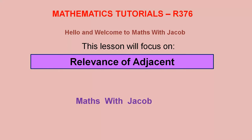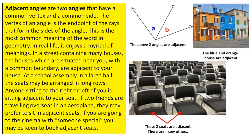Hello and welcome to Maths with Jacob. This lesson will focus on adjacent angles. Adjacent angles are two angles that have a common vertex and a common side. The vertex of an angle is the end point of the rays that form the sides of the angle.